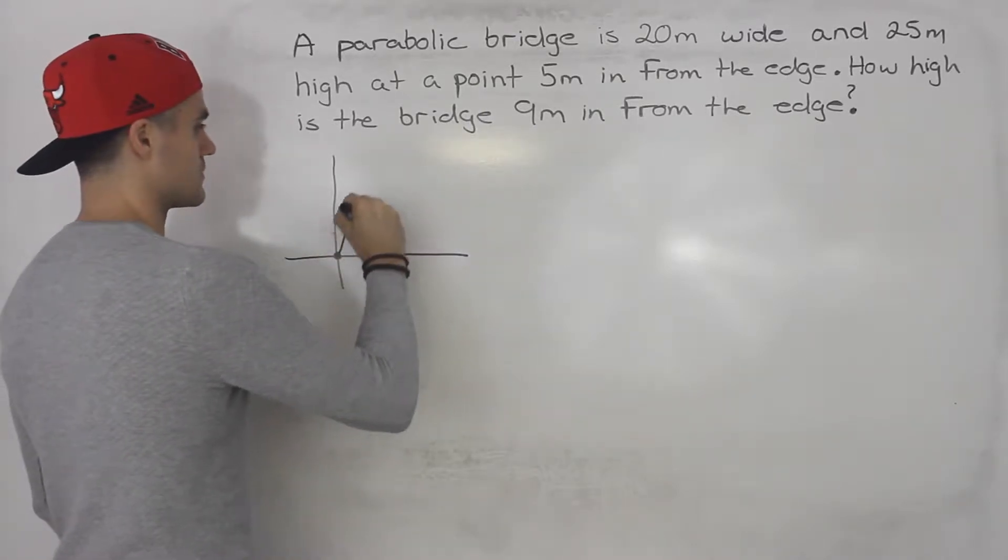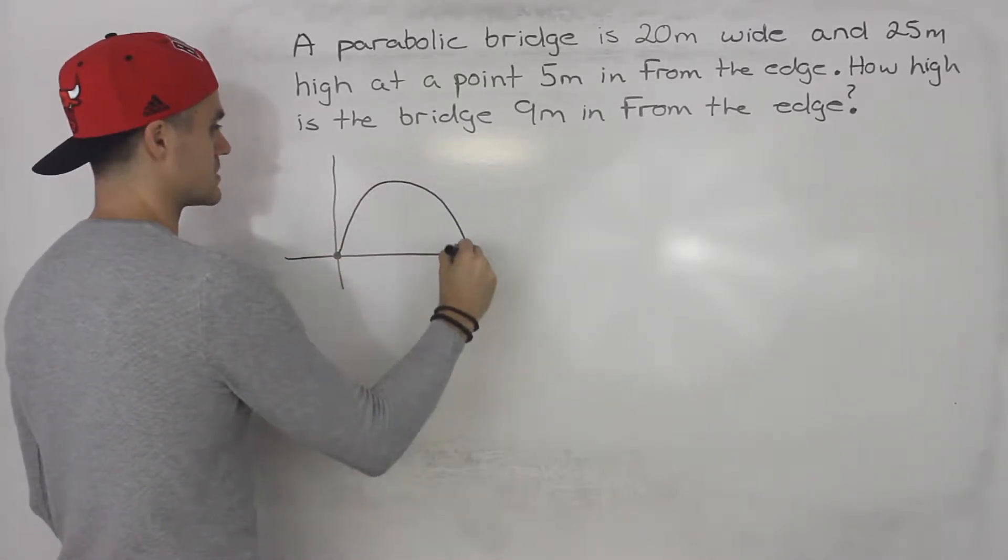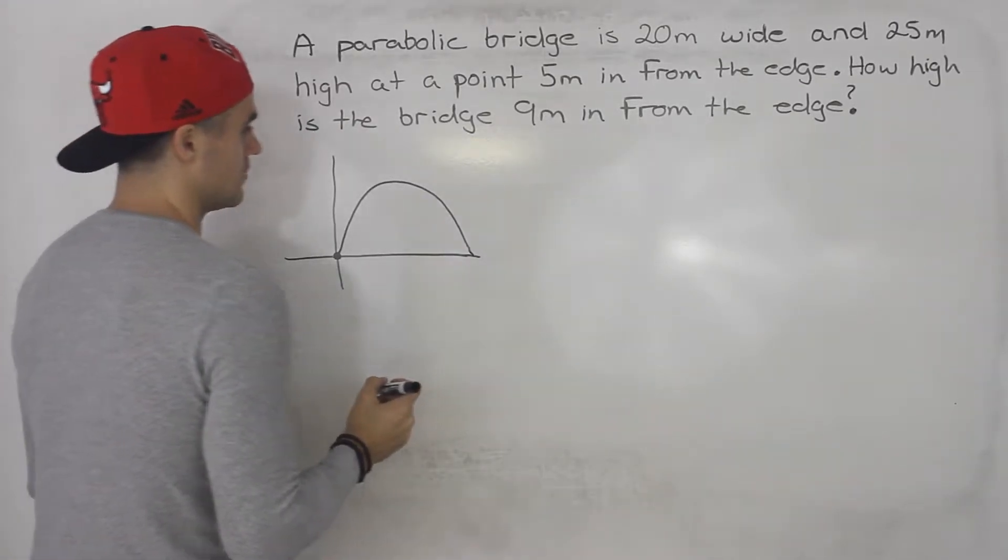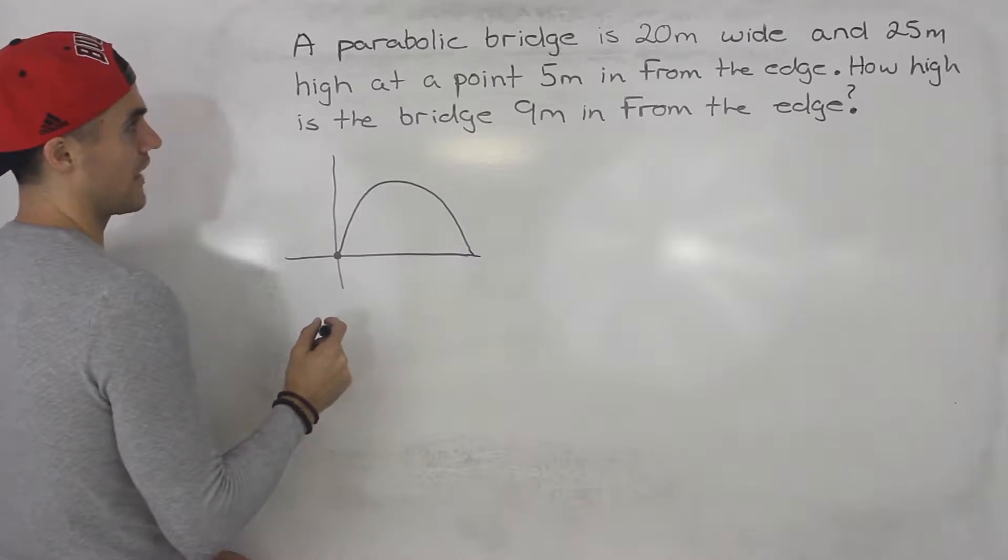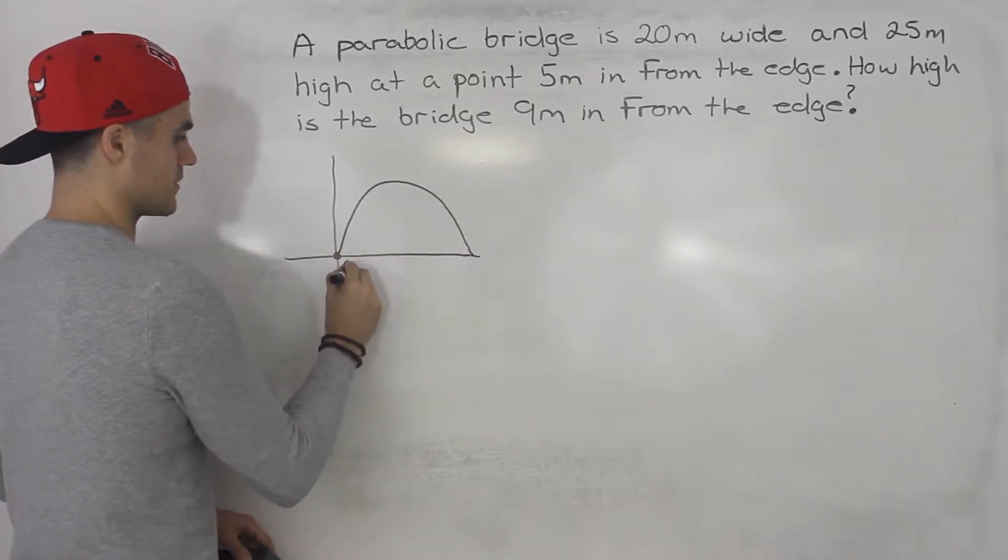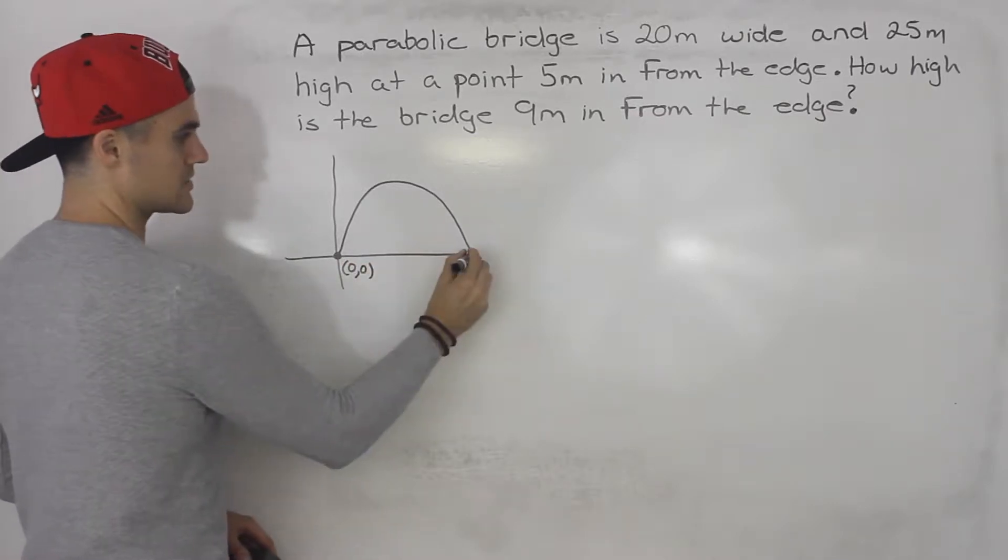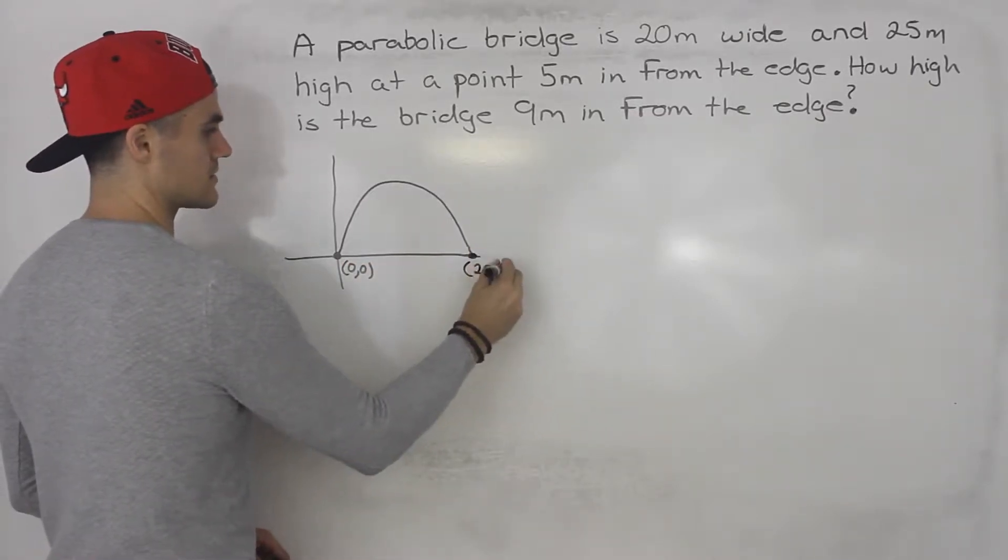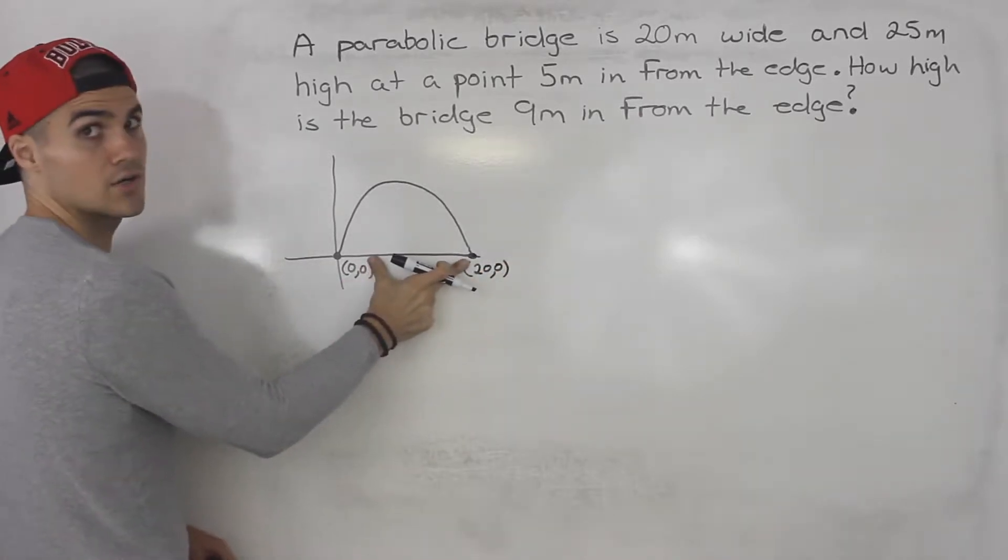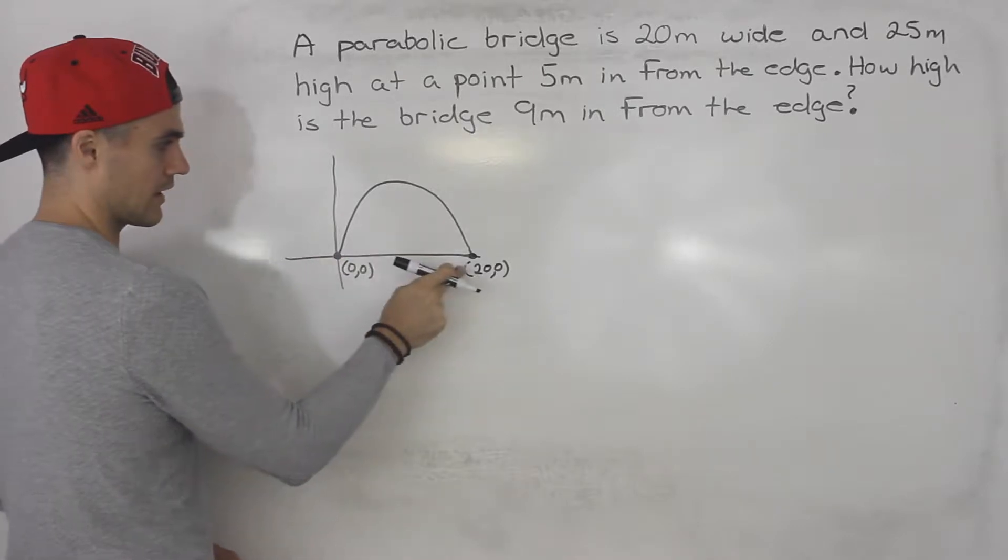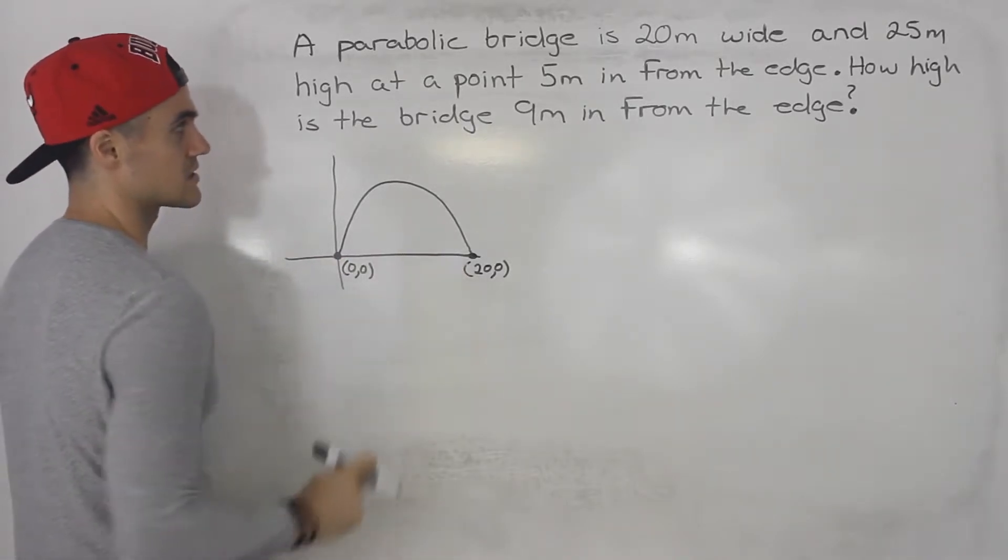So make it look something like this. So because we know that it's 20 meters wide, this point here is 0 and 0. Well what's this point going to be here? Well it's going to be 20 and 0. Right? 20 meters wide. So one of the x-intercepts is 0 and one of the x-intercepts is 20.